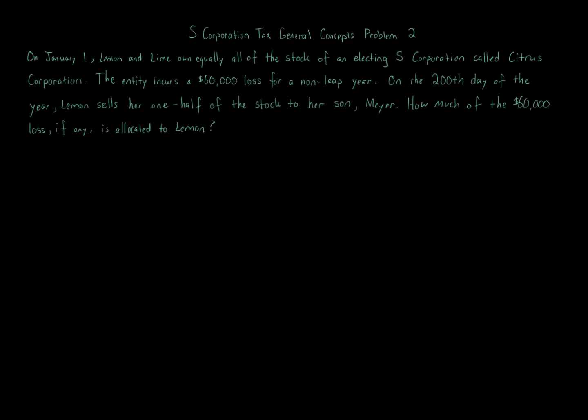S Corporation Tax General Concepts Problem 2. On January 1st, Lemon and Lime own equally all the stock of an electing S Corporation called Citrus Corporation. The entity incurs a $60,000 loss for a non-leap year. On the 200th day of the year, Lemon sells her one-half of the stock to her son, Meyer. How much of the $60,000 loss, if any, is allocated to Lemon?